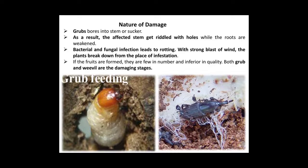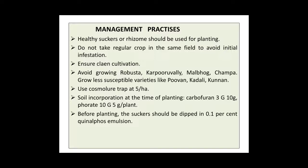Control Measures or Management Practices for Rootstock Weevil: healthy suckers or rhizome should be used for planting. Do not take a regular crop in the same field to avoid initial infestation. Ensure clean cultivation or follow sanitation. Avoid growing susceptible varieties like Rubistam, Karpurwali, Malbhog, and Champa. Grow less susceptible varieties like Pavan, Kadli, and Kundan. Use Cosmolure Trap at the rate of 5 per hectare.